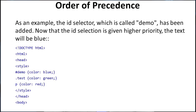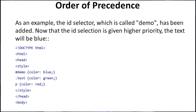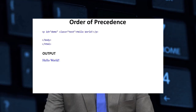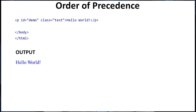The ID selector called 'demo' has been added and given higher precedence — the text will be blue. In the style tag we define #demo with color blue, class 'test' with color green, and P with color red. The ID demo has higher specificity so it wins. In the body, P with id equal to 'demo' and class equal to 'test' contains 'Hello World'. The output is blue because the ID selector has the highest priority.